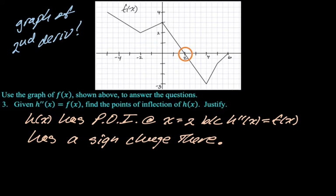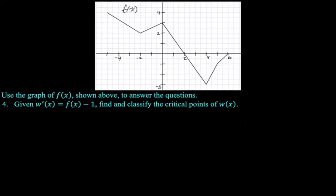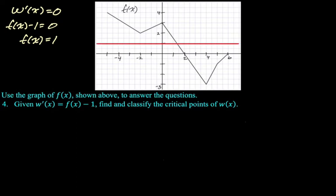All right, next question is the last question. Given that w prime is f of x minus one, find and classify the critical points of w of x. So now you need to think a little bit, this is actually a pretty common thing to do. We need to know the critical points. So that would be where w prime is equal to zero or does not exist. There's no place where w prime doesn't exist, because if you take f of x and just shift it down one, it's still just a continuous function. So we're really only looking for where w prime equals zero. Now start thinking through if w prime is zero, that means that f of x minus one is equal to zero, because that's the definition of w prime. That means that f of x must equal one. So I need to figure out where this graph is equal to one.